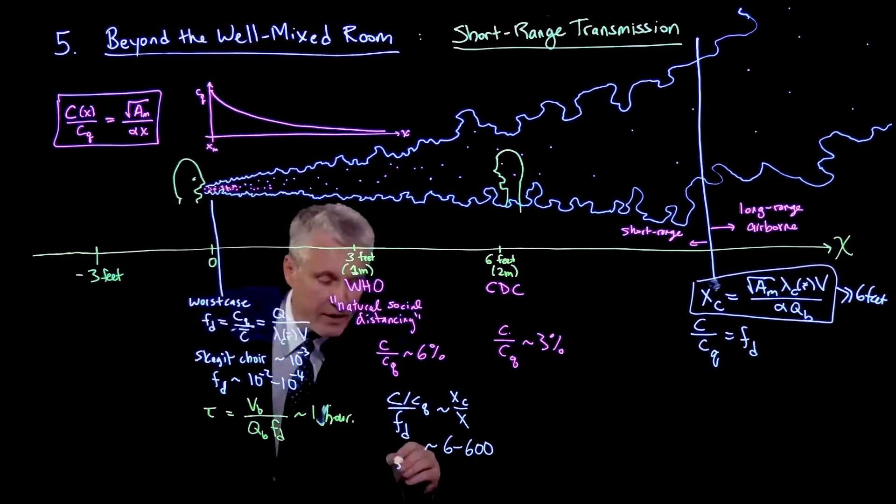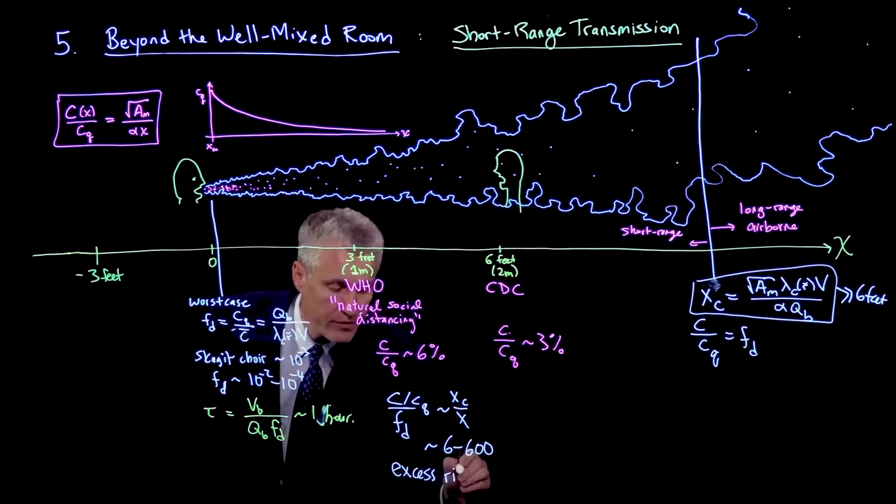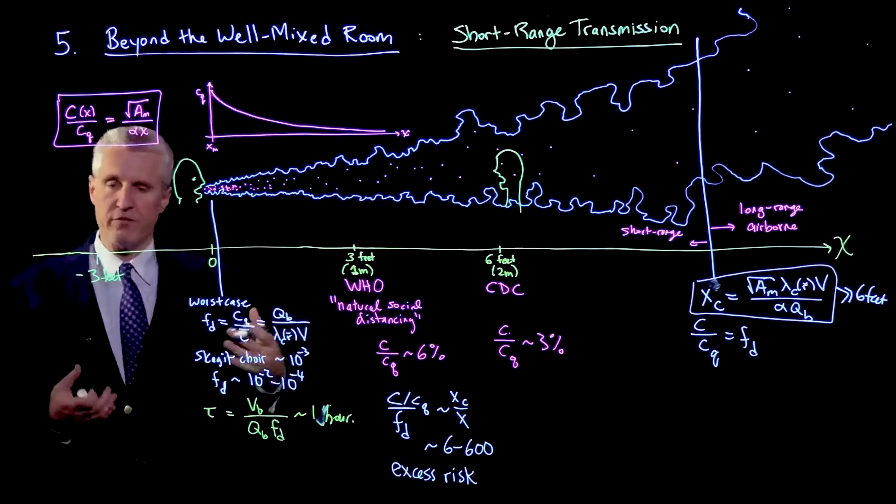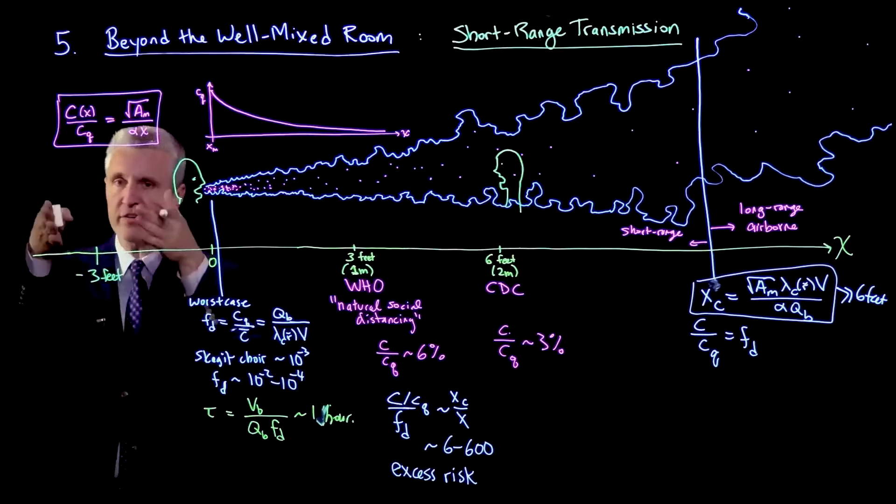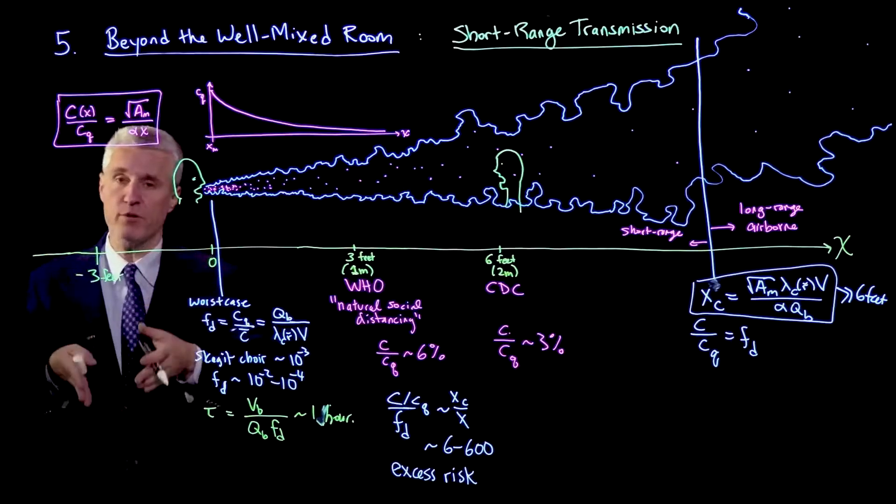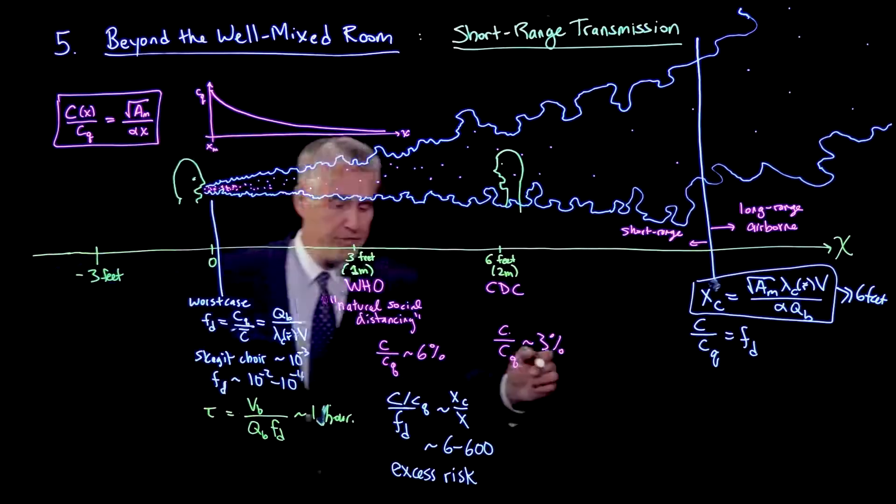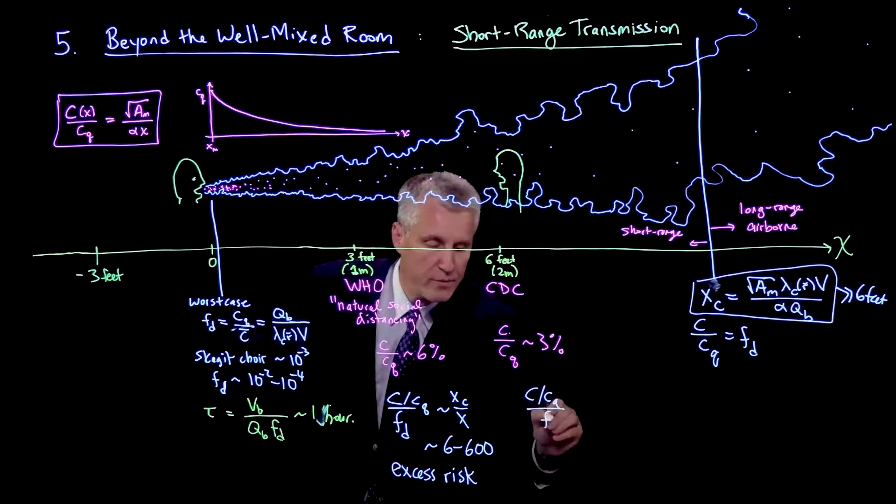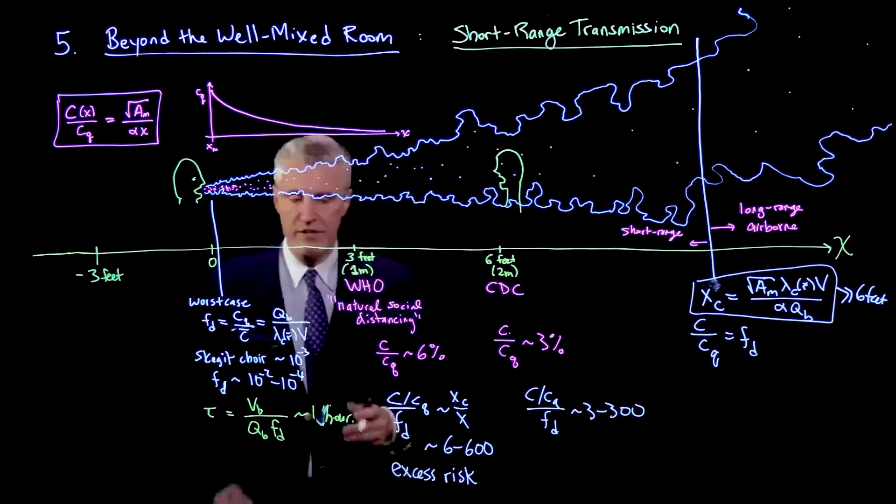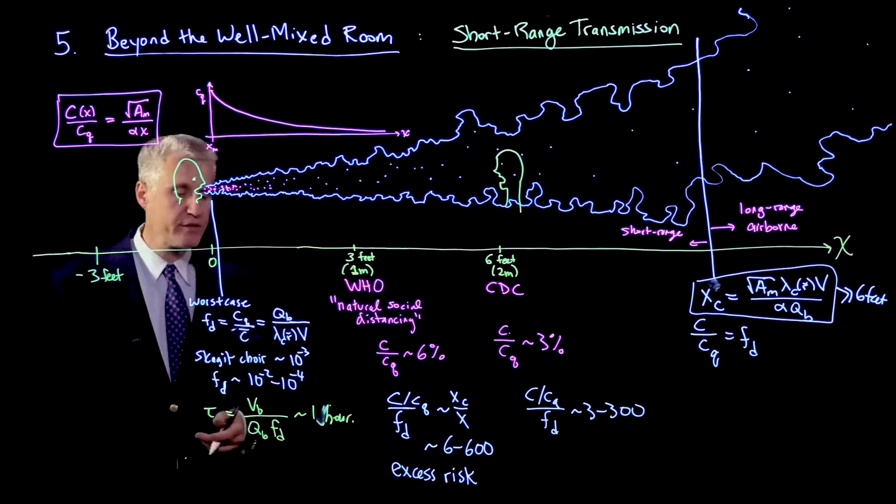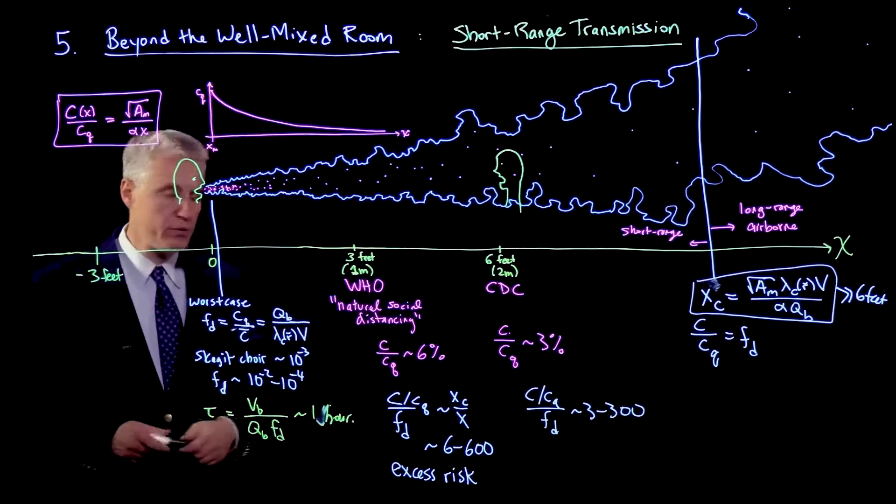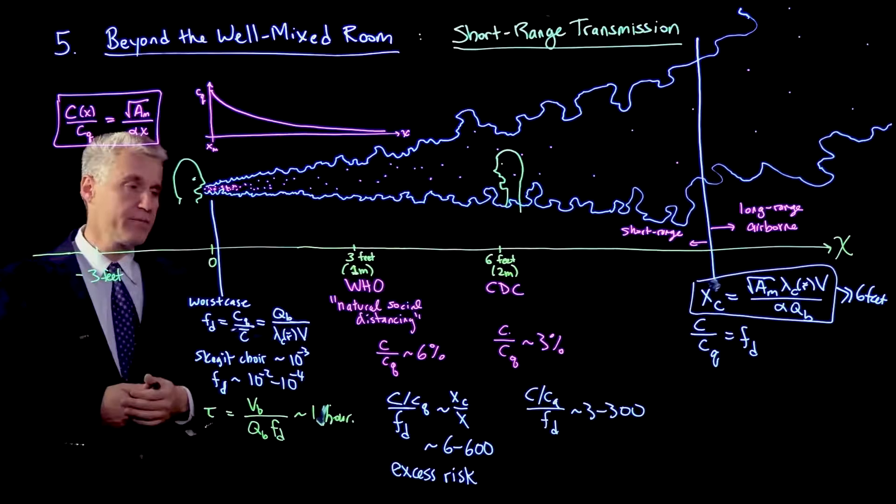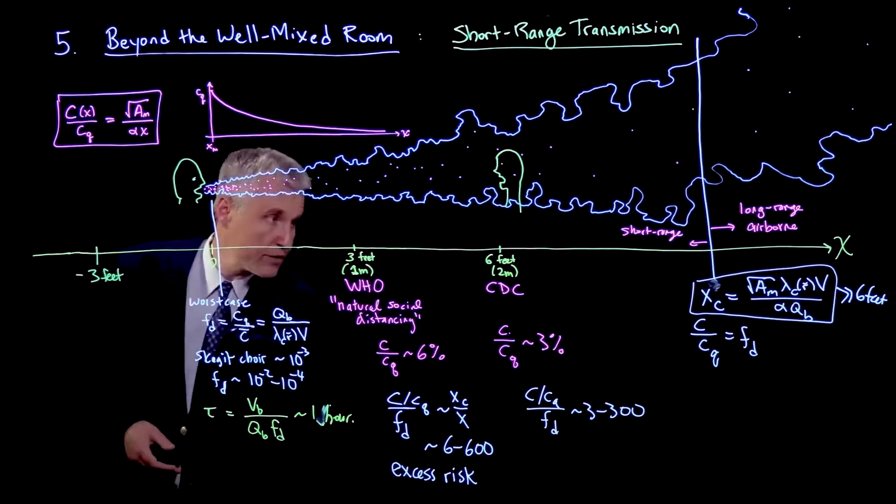This is then 6 to 600. This is the excess risk if you stand 3 feet away, the excess risk from short-range transmission if you are 100% of the time breathing in the jet of the infected person pointing right at you. If you take the 6-foot rule, it's a little less strong. You have C/CQ divided by Fd that is more like 3 to 300. It depends on details of the room, but it can be a significant factor. We will come back to thinking about how to handle short-range transmission in light of its interaction with long-range.